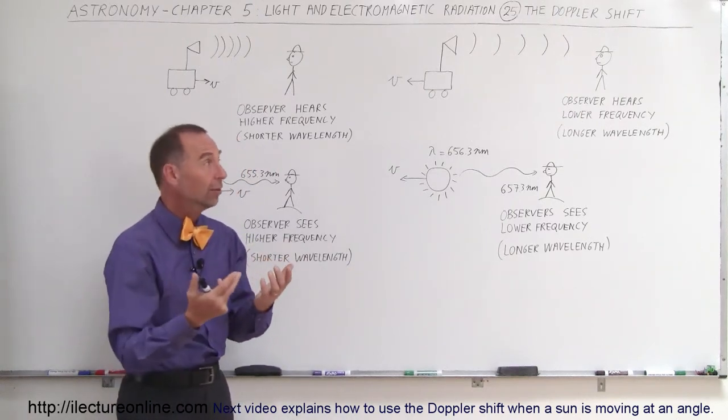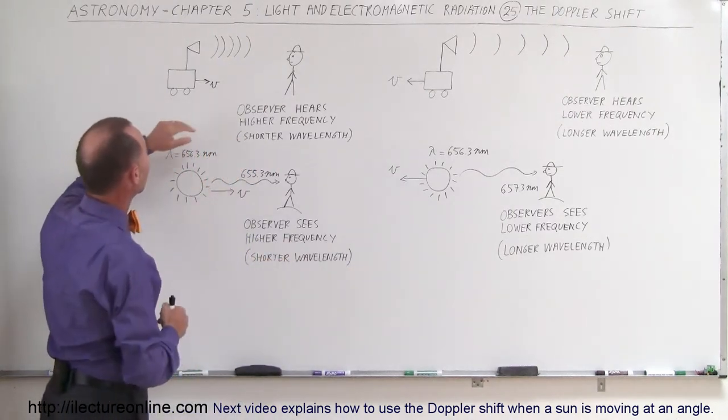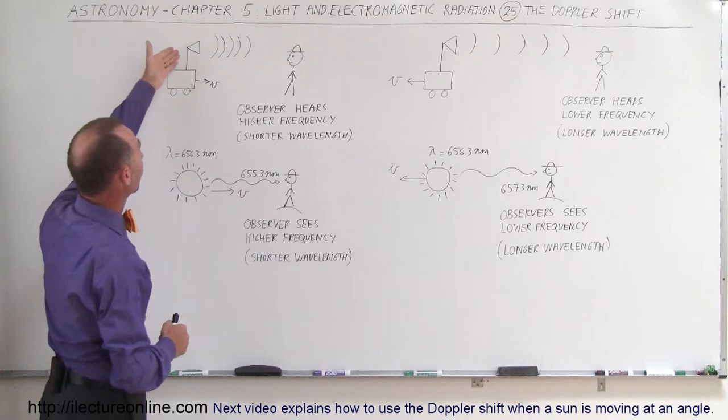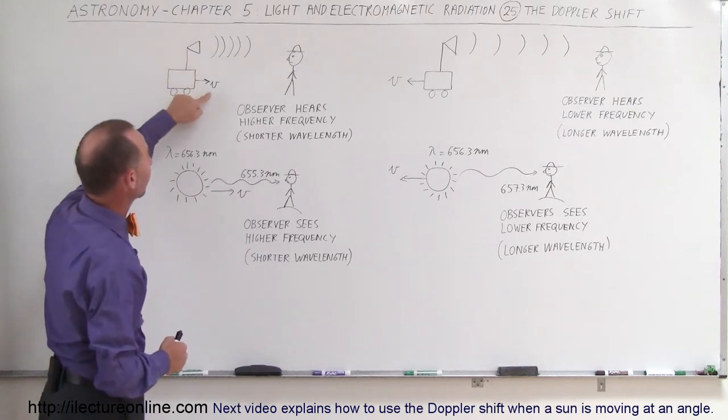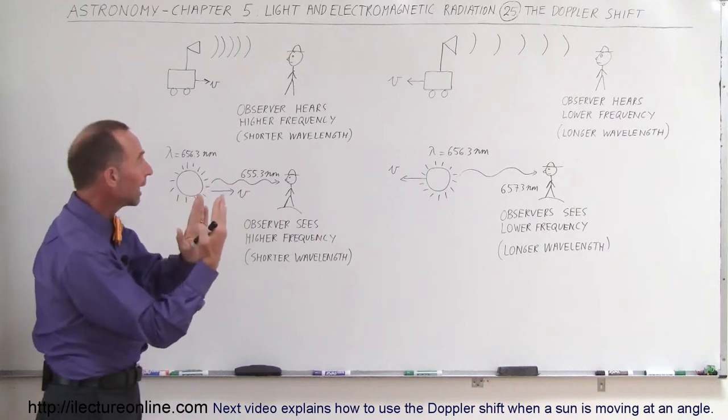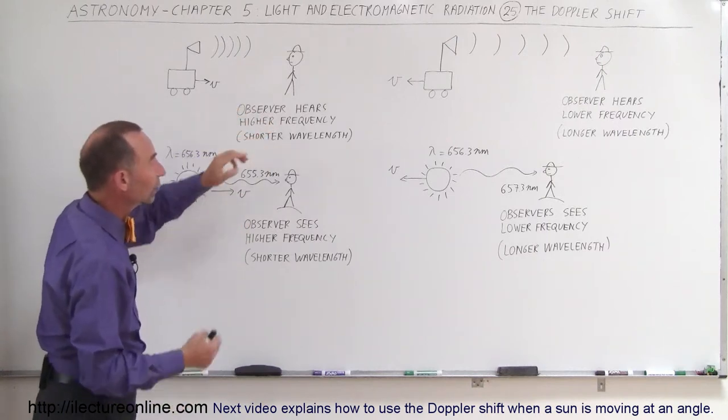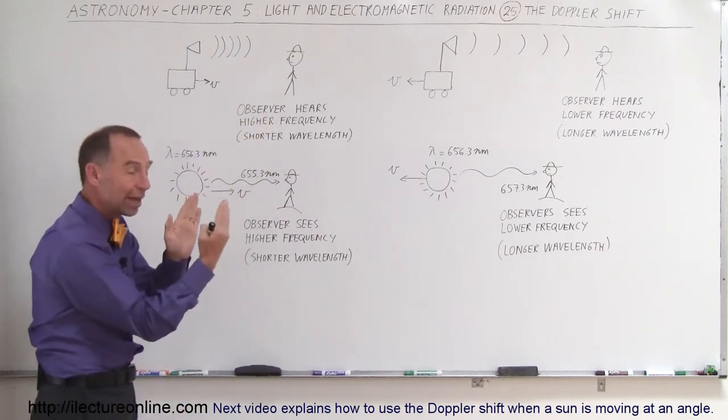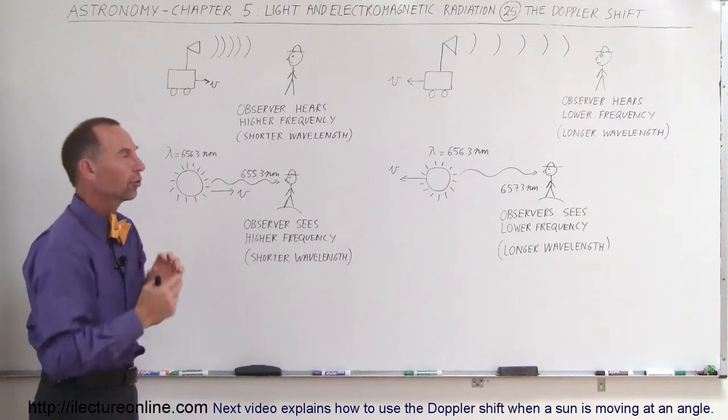That's called the Doppler shift and we have it illustrated here. Let's say we have a source of some sound that's moving towards us with some velocity V and the wavelengths are then packed closer together so the observer hears a higher frequency because the waves are now shorter. They've been pushed closer together.